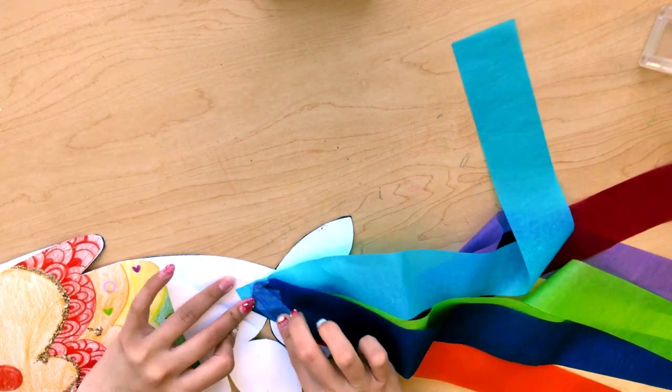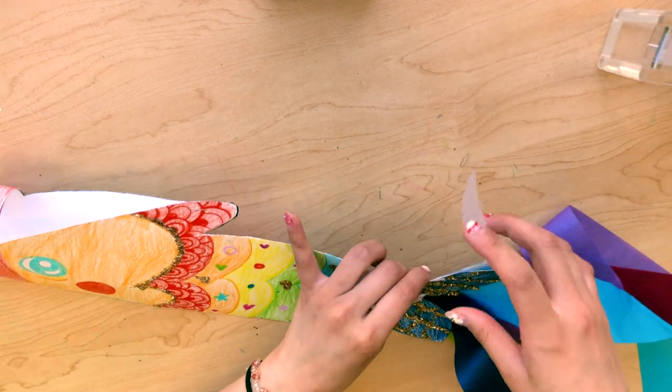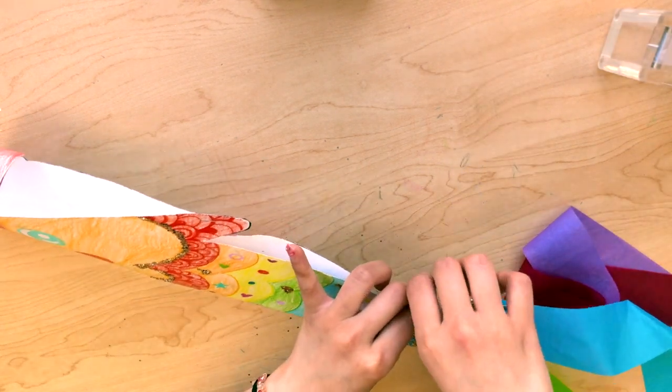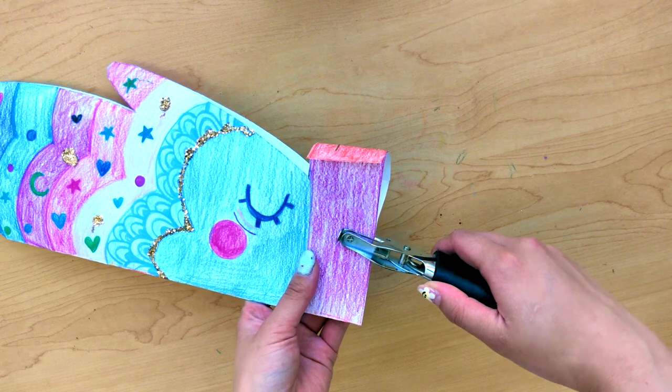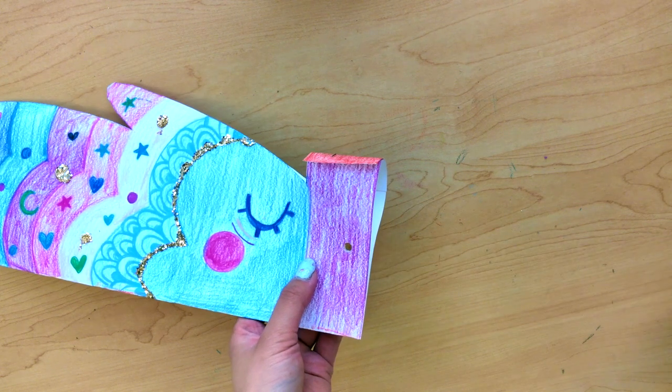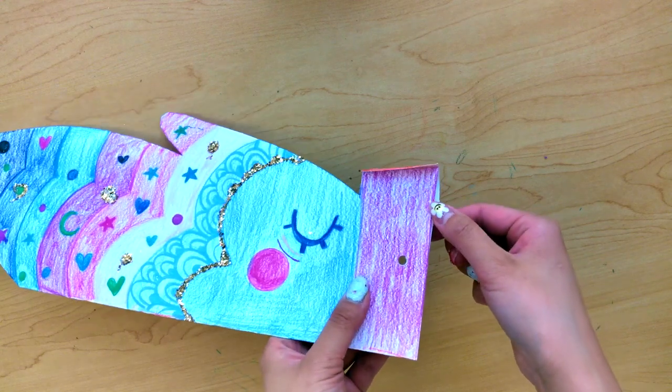Once that's done, I'm going to tape my tails together. Please make sure to add a hole in the front where the mouth is so that we could put the string through. I used a hole puncher, but if you don't have one, you may just use your pencil to poke it through.